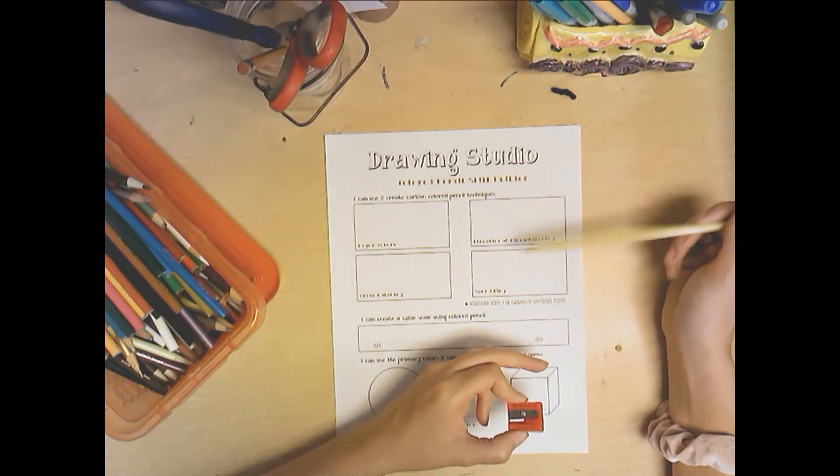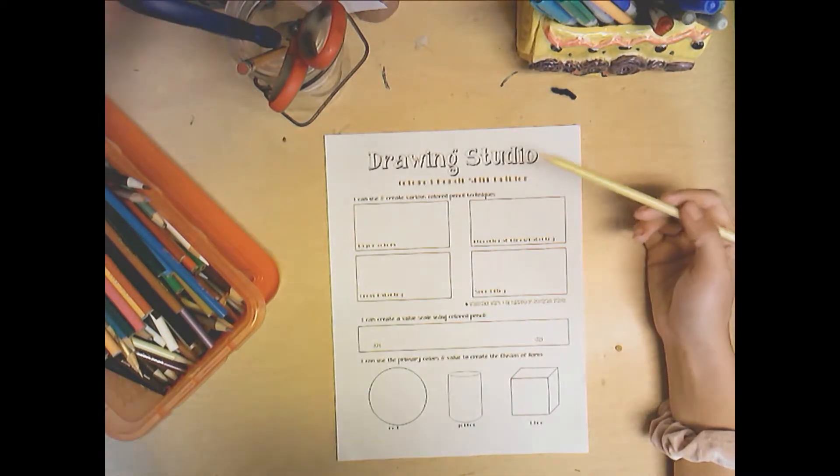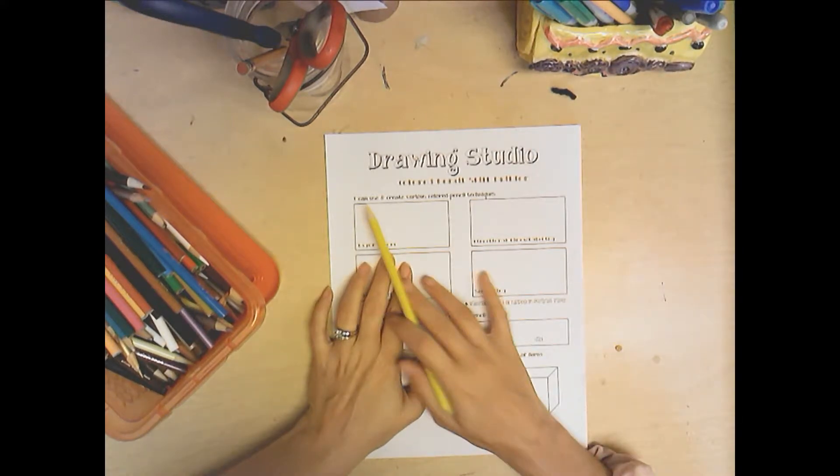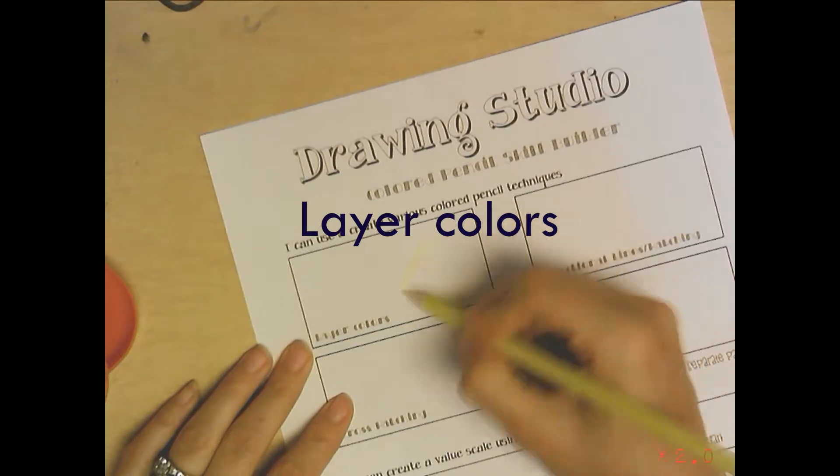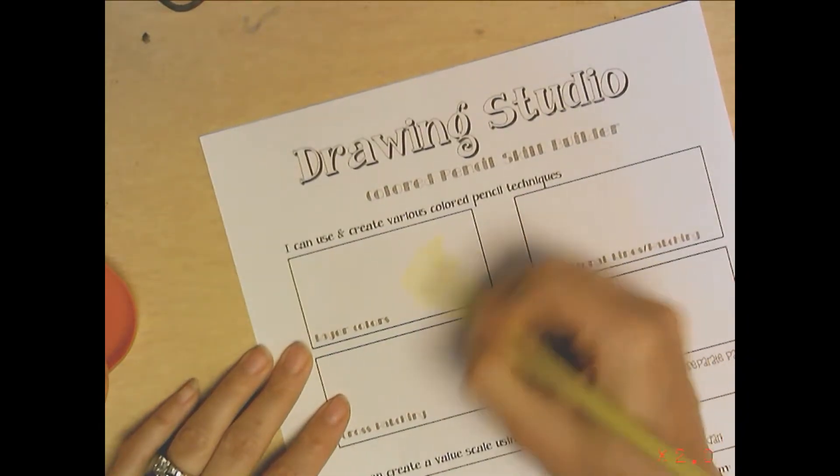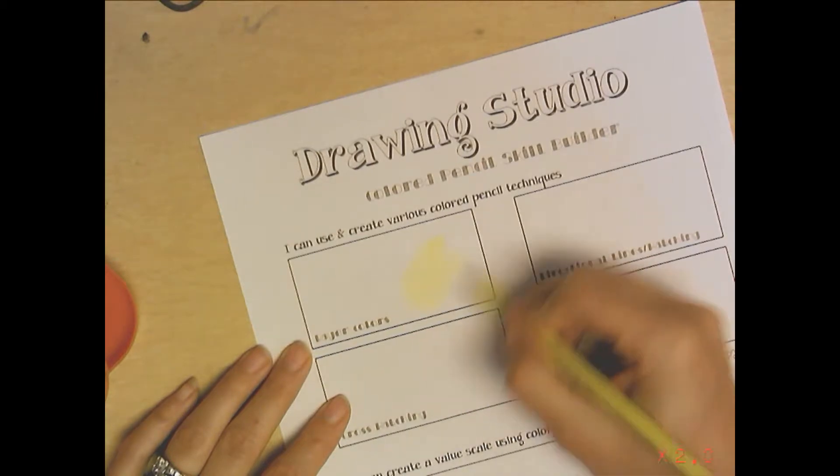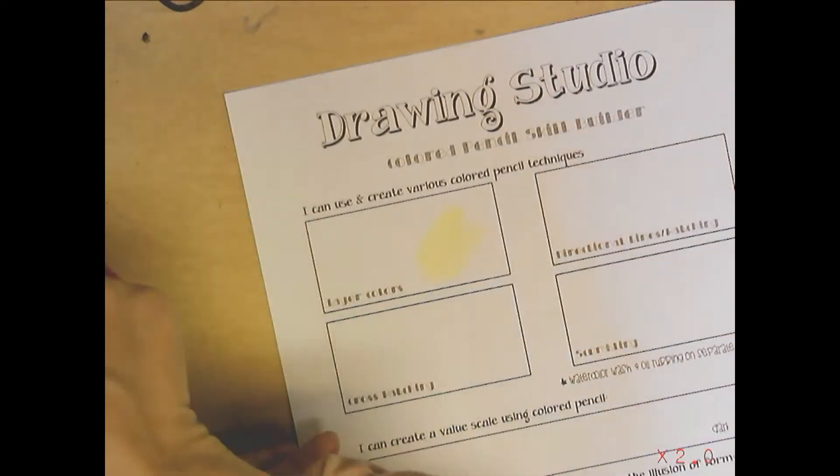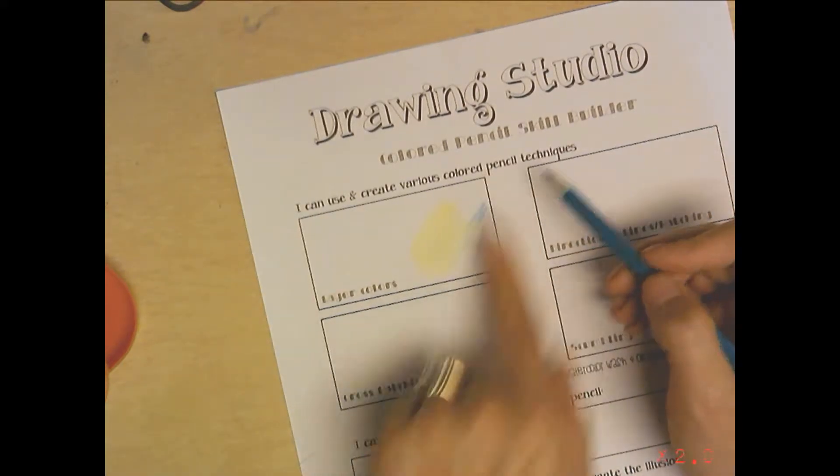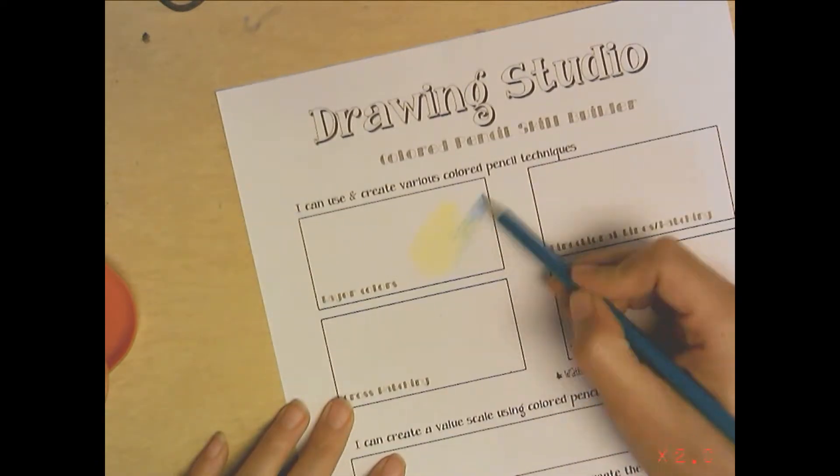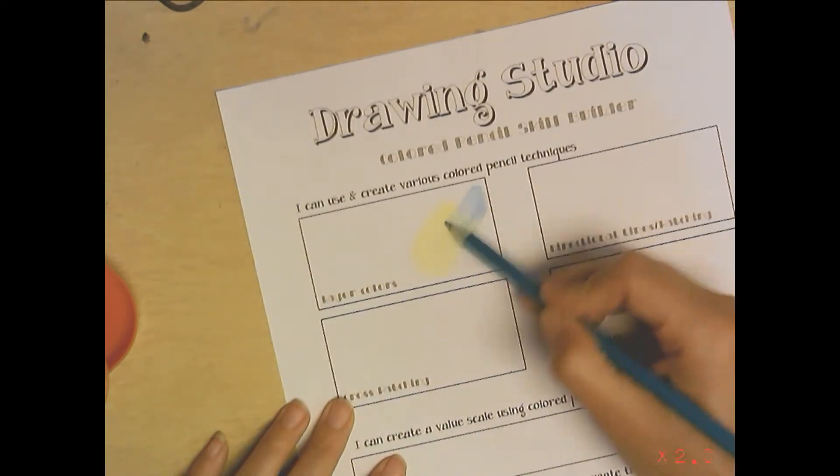What we're going to do here is you are going to layer colors in this first box, layering colors on top of each other. Pick a color - maybe I'll just do some yellow here. Then pick another color. To layer means go on top of, so I'll take this teal and I'll layer a little bit on top of the yellow. Then I'll make the teal kind of go out where I didn't color any yellow so I can see the difference of what happens when I layer a color on top of another color.